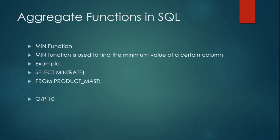First is the MIN function. What it exactly does is find the minimum value of a certain column. For example, in the table called 'product_masked', there is a column called 'rate' — rate means the price. If you want to fetch the minimum rate from the product_masked table, it will fetch the minimum rate from that rate column. You can see in the output it has fetched that minimum rate.